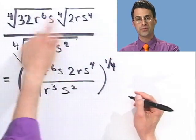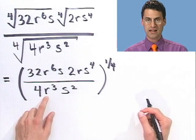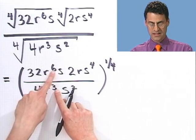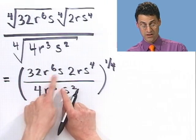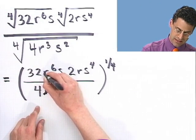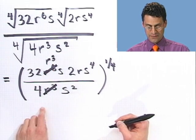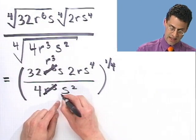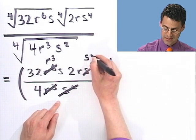Now I can cancel common factors on top and bottom. I have r to the sixth on top and r cubed on the bottom — subtracting exponents leaves r cubed on top. For the s terms: s to the fourth on top and s squared on the bottom cancel to leave s squared. For the numerical factors: the 4 cancels with the 2, leaving a 2 downstairs, and that 2 cancels with the 32 to give 16.